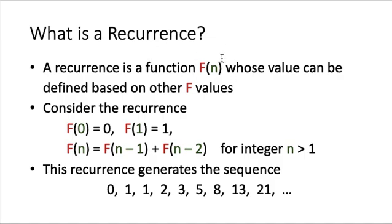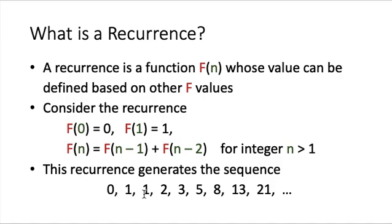Before we solve the recurrence, let us review what is meant by a recurrence. A recurrence is a function — let's say f of n — where the values of f of n are each defined based on other values of f. For example, consider: f(0) = 0, f(1) = 1, and for n greater than 1, f(n) = f(n-1) + f(n-2). Using this definition we can generate the sequence 0, 1, 1, 2, 3, 5, 8, 13, 21, and so on.